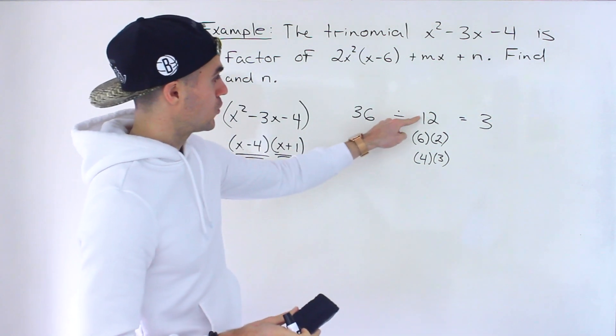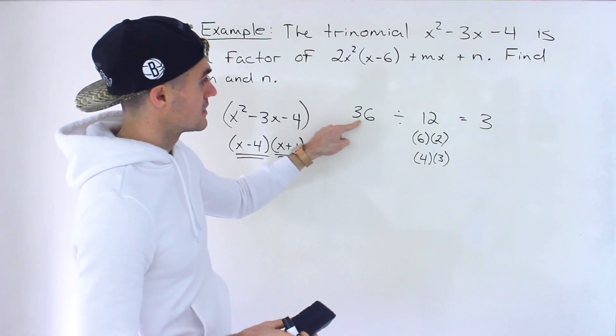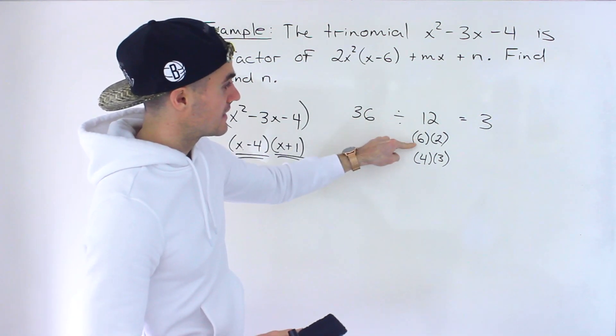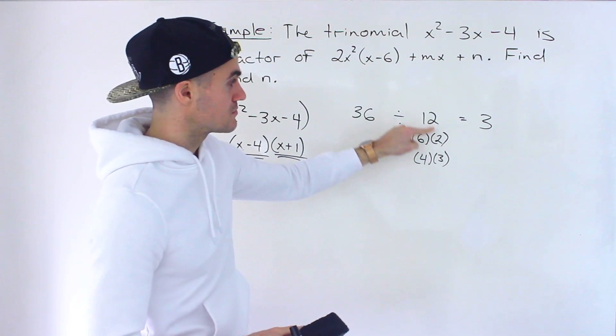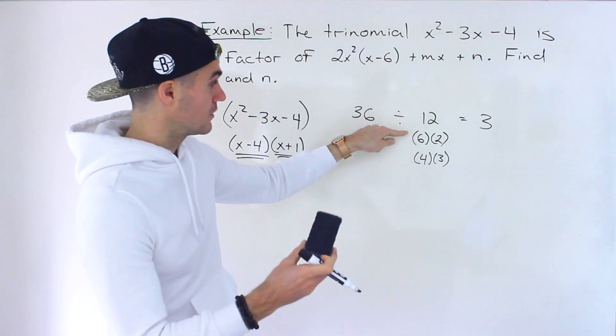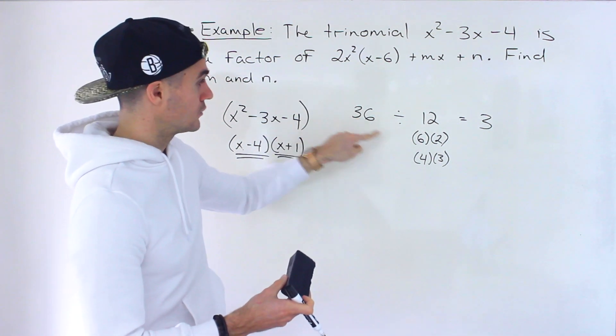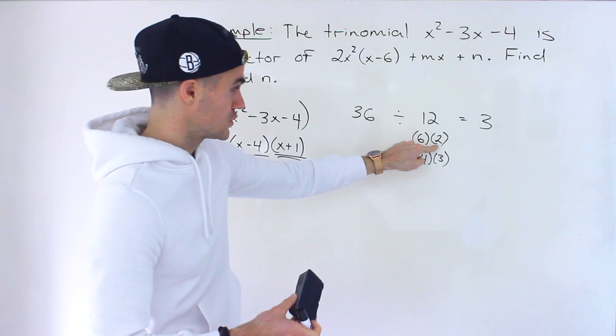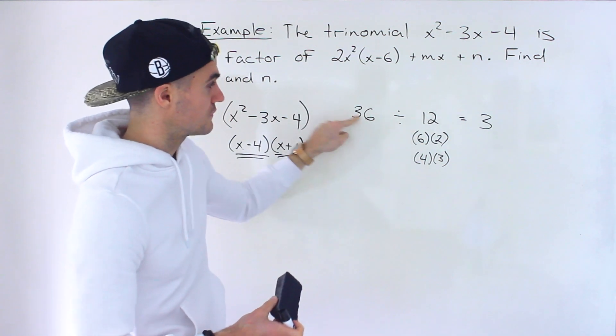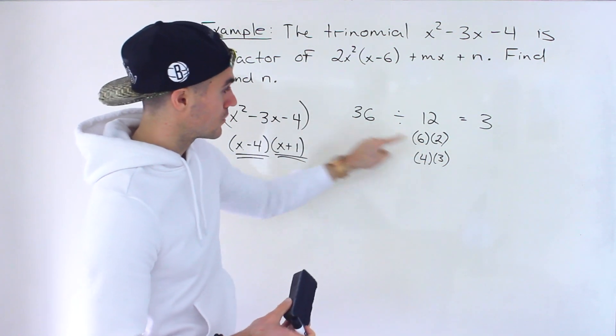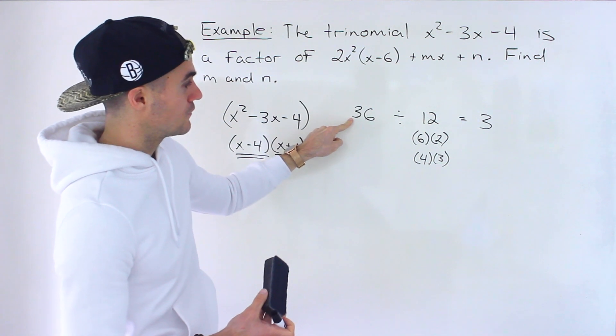Break down the large factor into smaller factors. Well then these smaller factors are factors of that as well. Notice 6 is a factor of 36. 2 is a factor of 36. 4 is a factor of 36. 3 is a factor of 36.